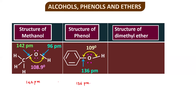Notice that the carbon-oxygen bond in methanol is 142 picometers whereas in phenol it is 136 picometers. Since 142 is greater than 136, the C-O bond in phenol requires more energy to break, whereas for methanol you require less energy.